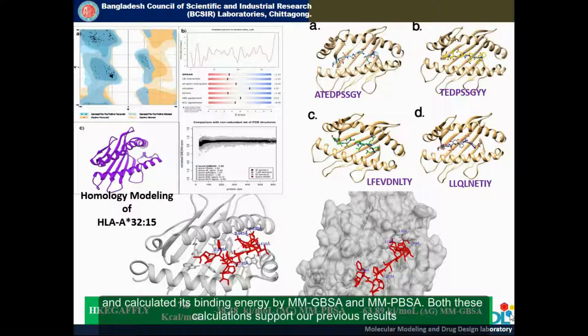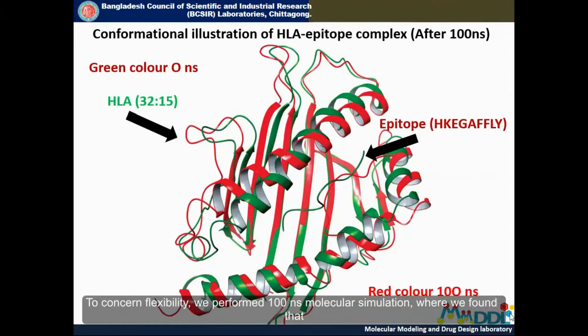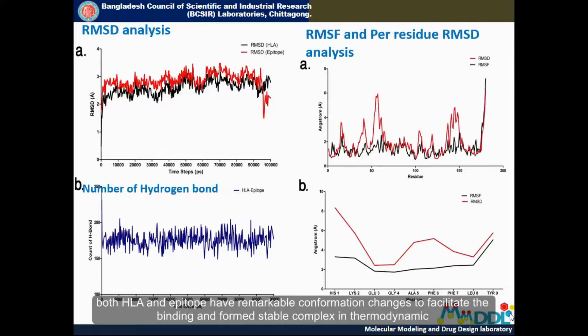For further clarification, we docked all epitopes into HLA3250 and calculated its binding energy by MMGBSA and MMPBSA. Both these calculations support our previous results. To assess flexibility, we performed 100 nanosecond molecular simulation, where we found that both HLA and epitope have remarkable conformational changes to facilitate the binding and formed a stable complex in a thermodynamic environment.